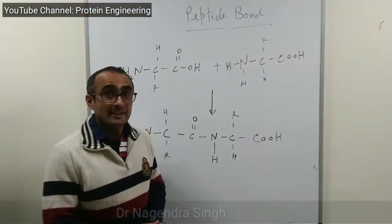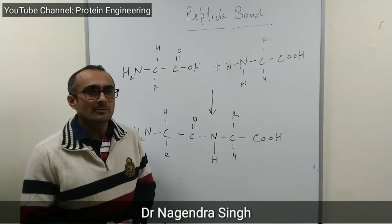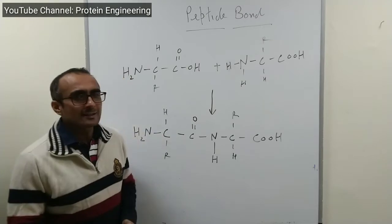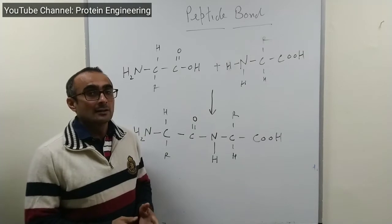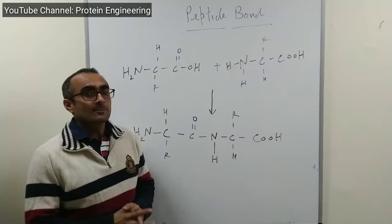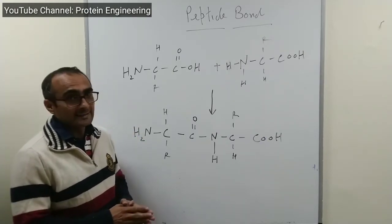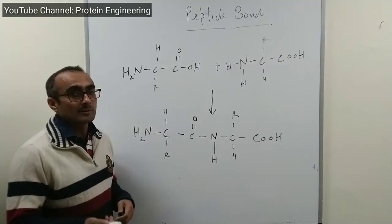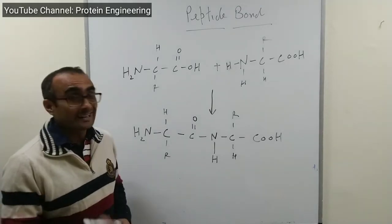Today we will talk about peptide bonds. We know that proteins are sequences of amino acids — they are also called polymers of amino acids. In a protein sequence, consecutive amino acids are joined together through a special covalent interaction called a peptide bond, also known as an amide bond, where the amino terminal of one amino acid and the carboxyl group of another amino acid react together to form this special linkage.